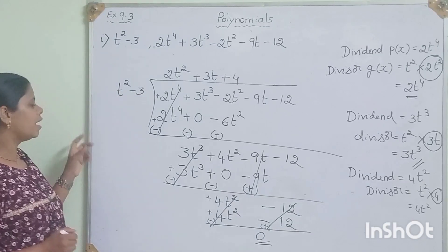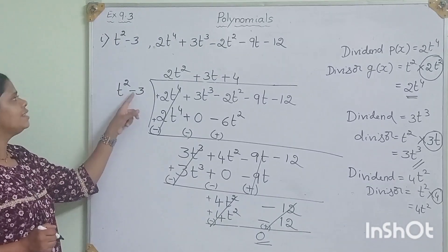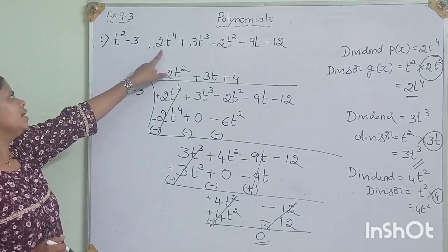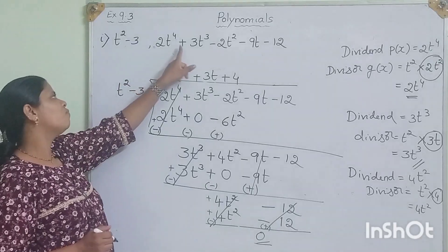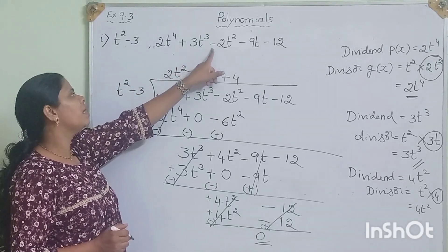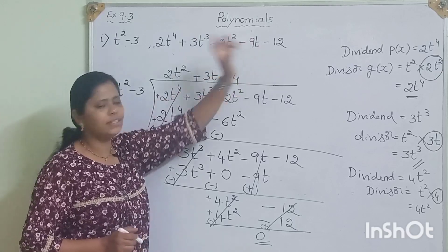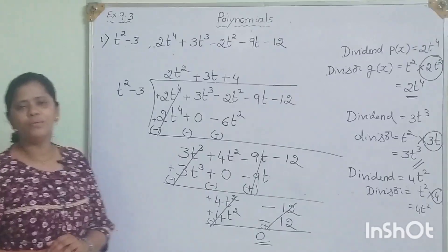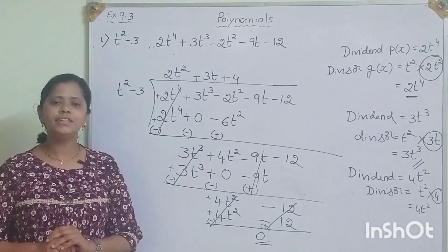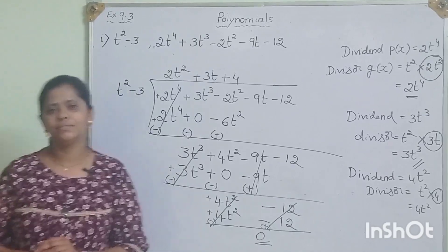Therefore we write: yes, t squared minus 3 is the factor of 2t to the power of 4 plus 3t cubed minus 2t squared minus 9t minus 12. Hope you have understood. Let us move on to the second question.